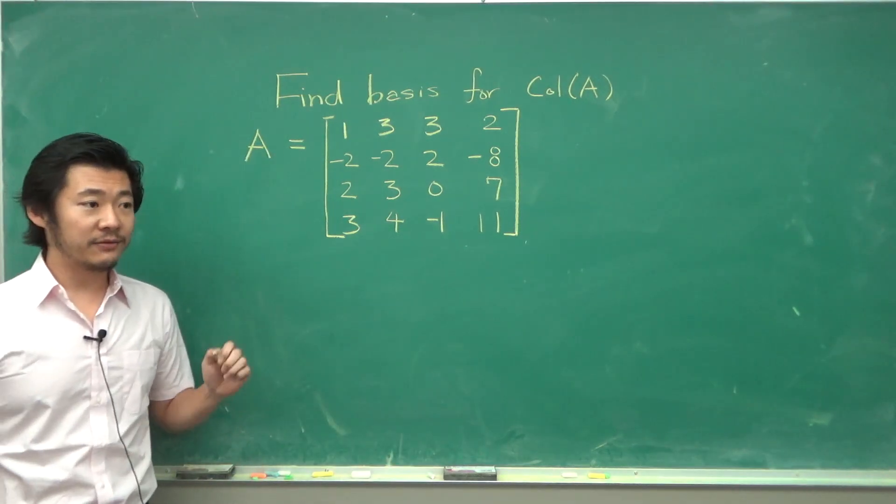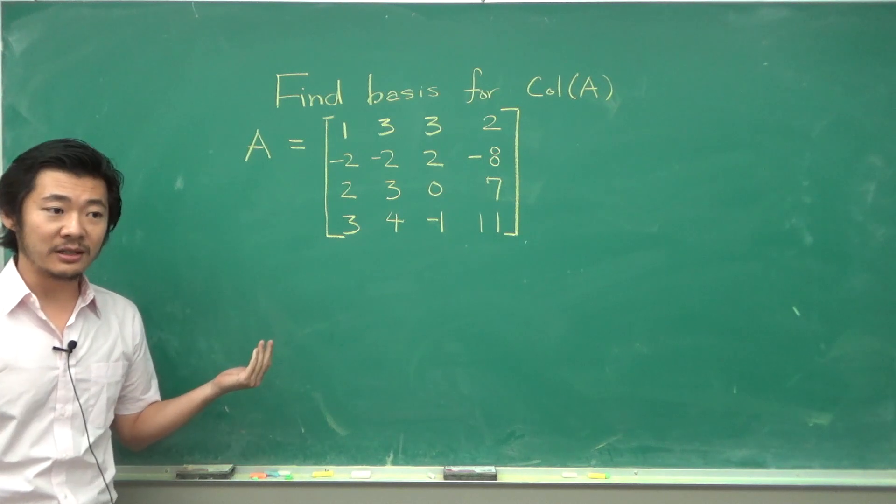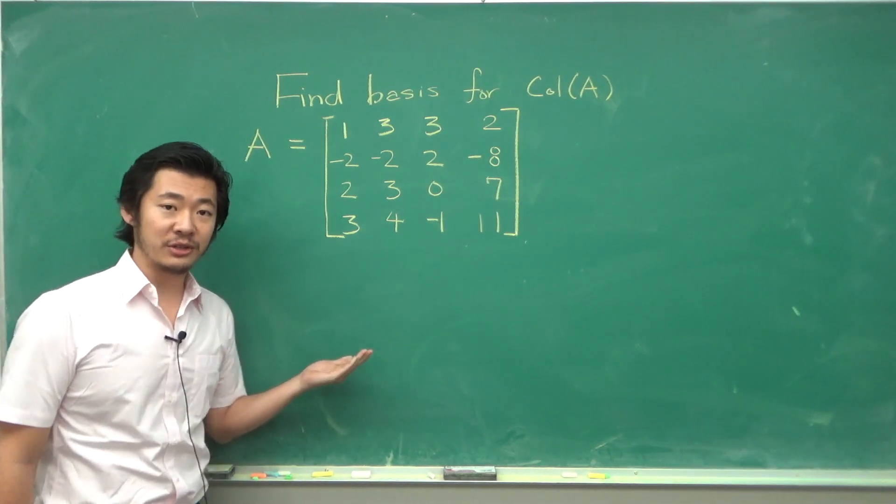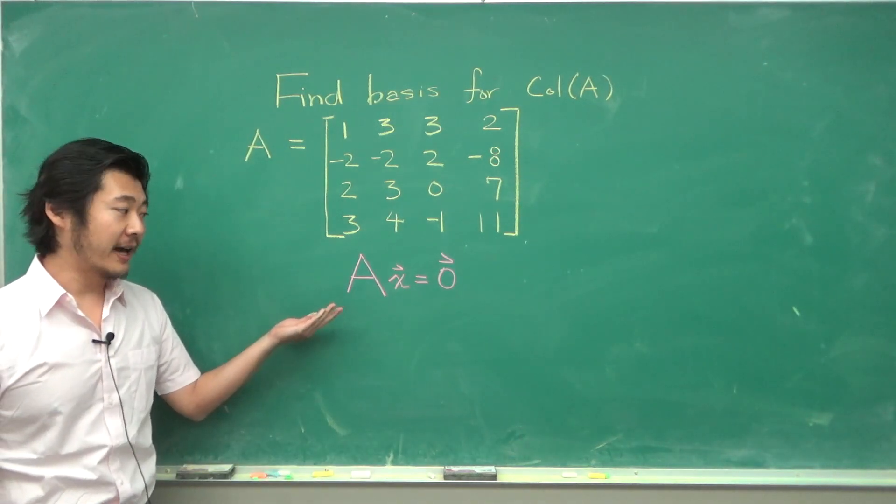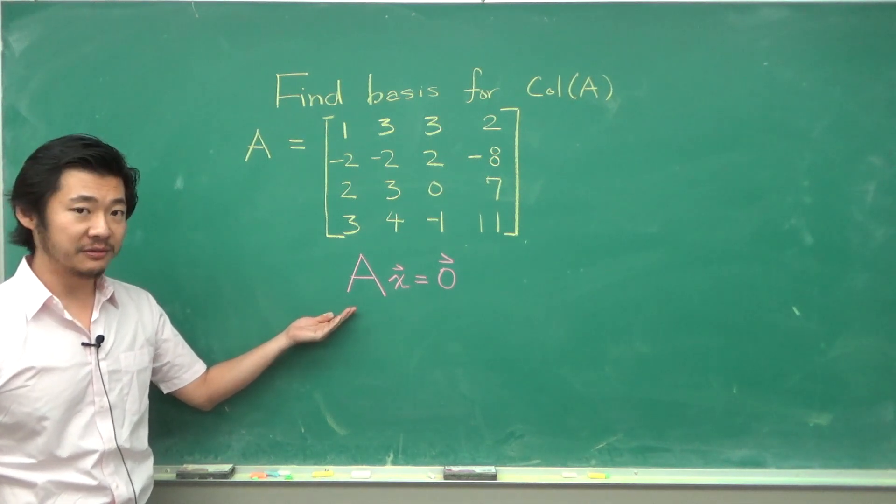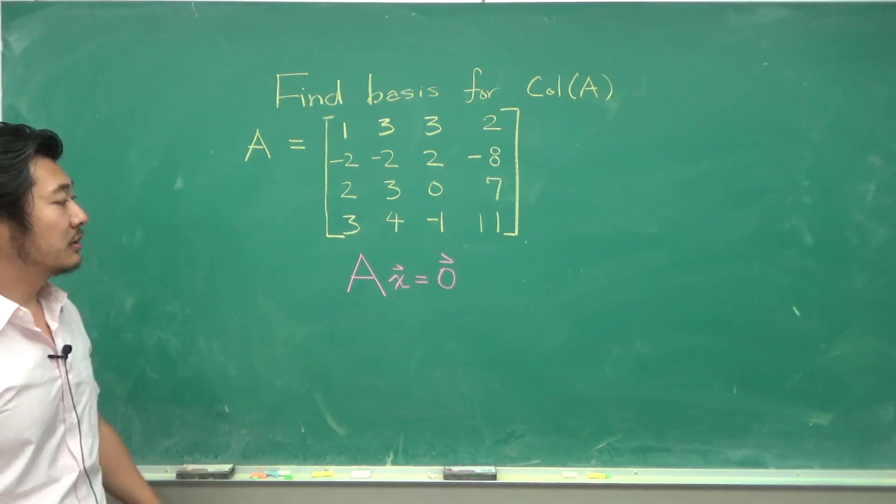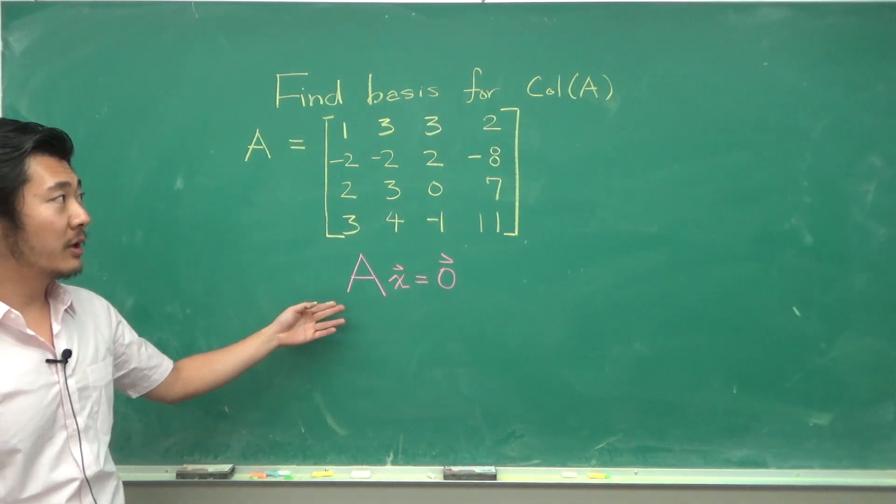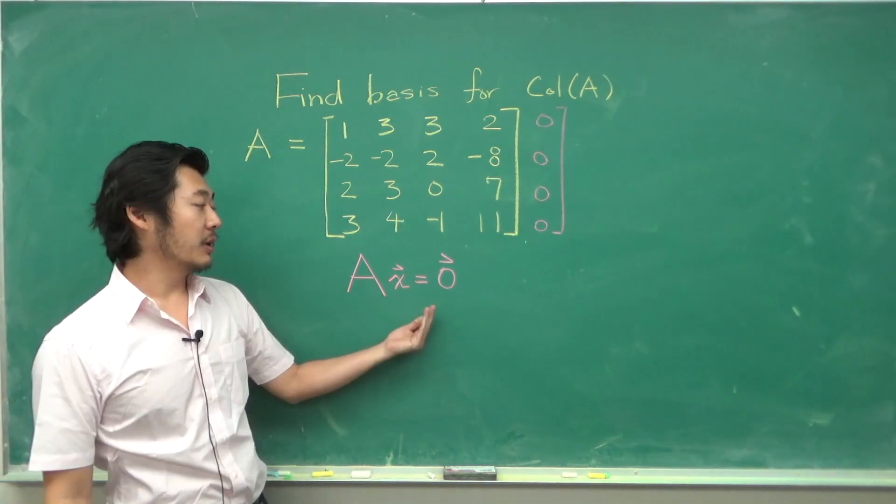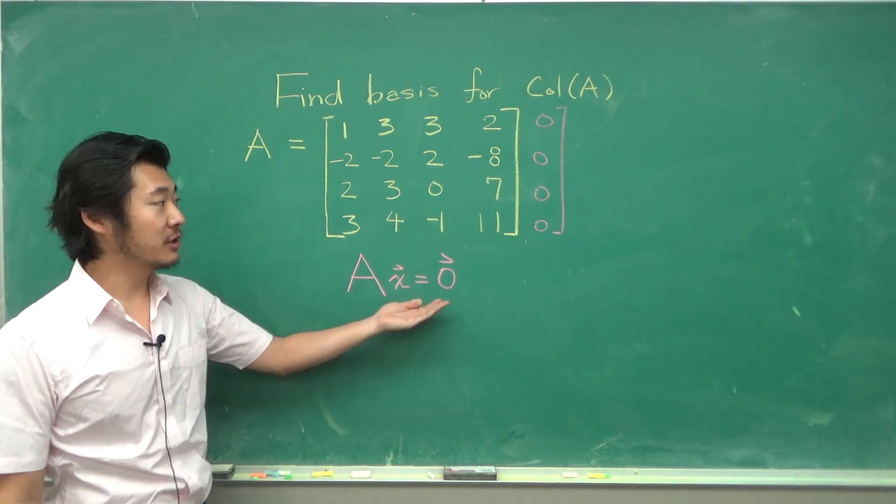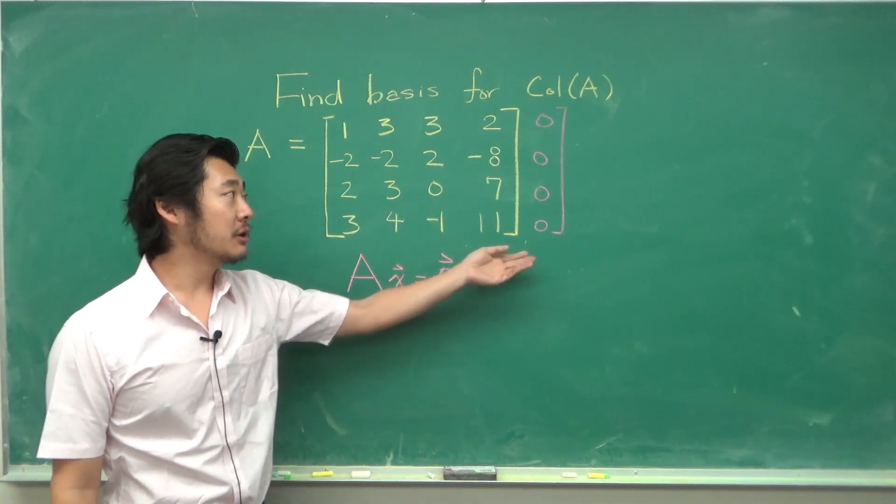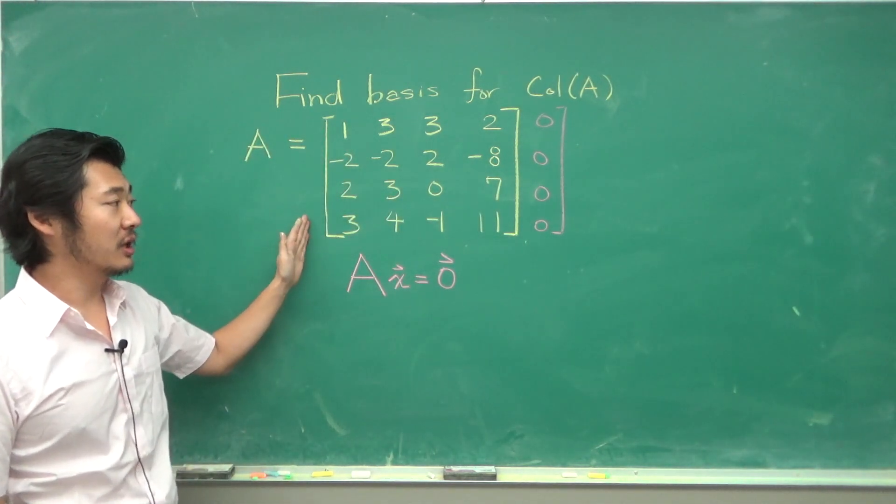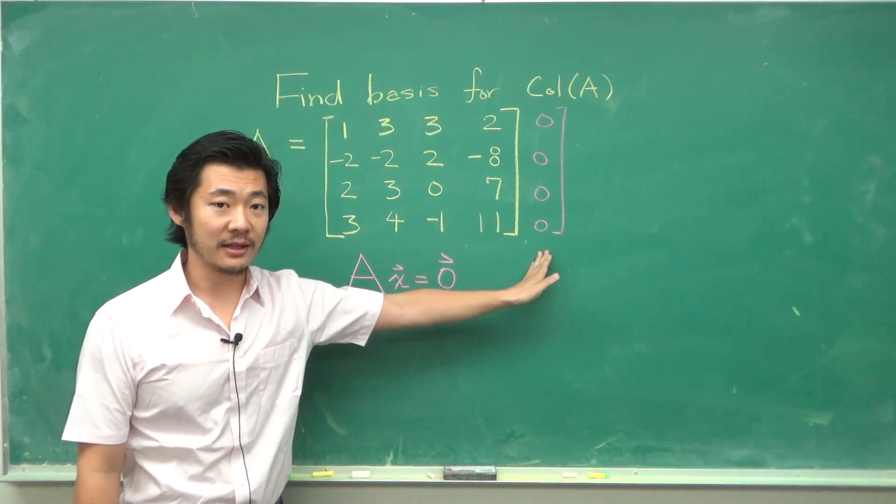In order to check if a set of vectors is independent we set up the homogeneous equation and we want to show that the only solution is the trivial solution if they are linearly independent. So to do this we would form the augmented matrix, but because this is a homogeneous equation the last column is zero, so any row reduction operation that we would do doesn't really affect this last column.